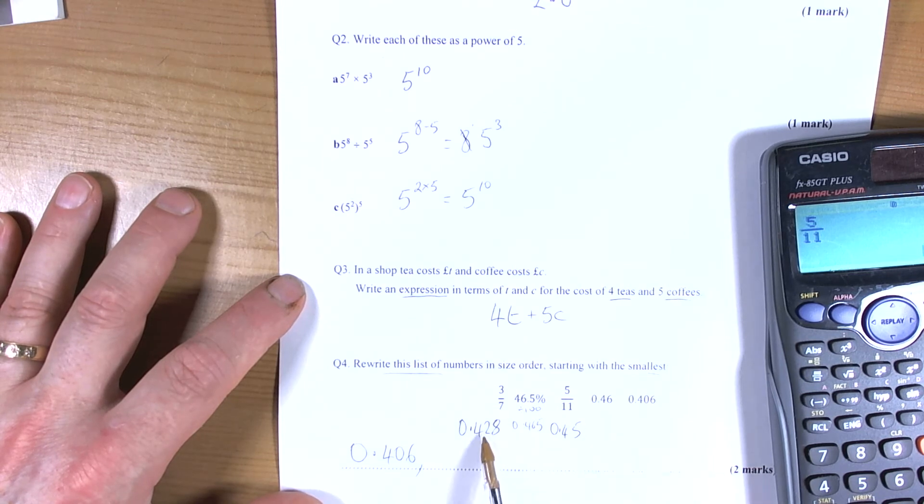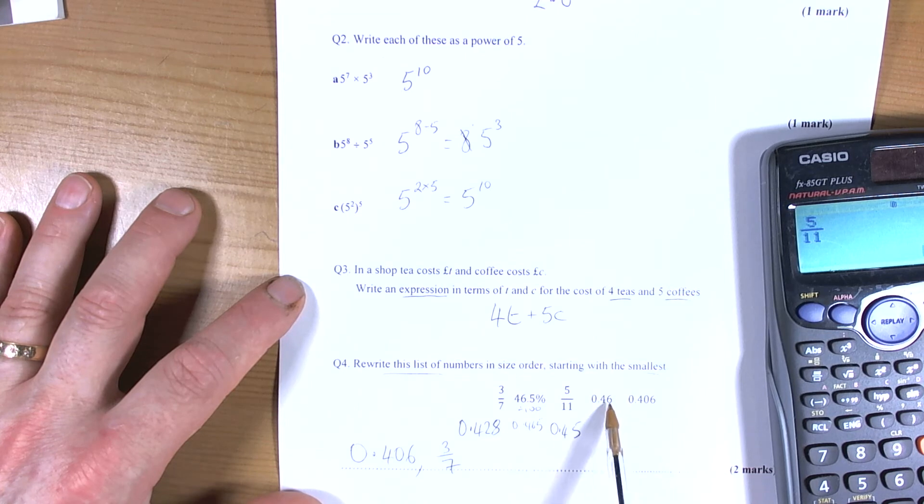The next one, this one's got 2 tenths, sorry 2 hundredths. 6 hundredths. 5 hundredths. 6 hundredths. So it's going to be this one next, so it's 3/7. And then we've got 5 hundredths, 6 hundredths, 6 hundredths. So this one next, so 5/11.